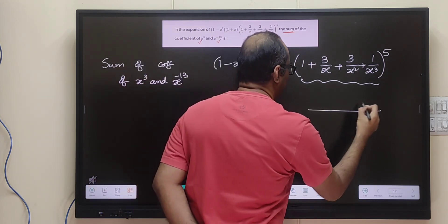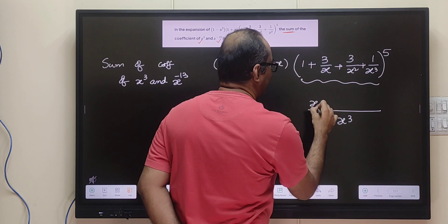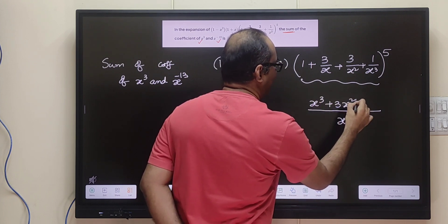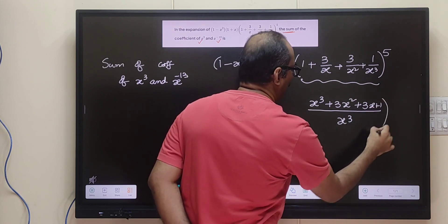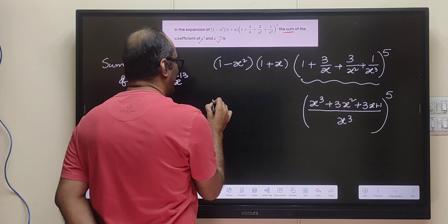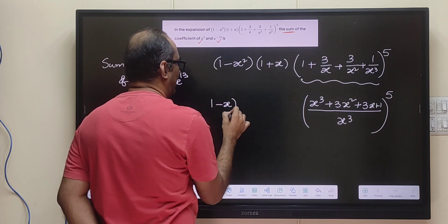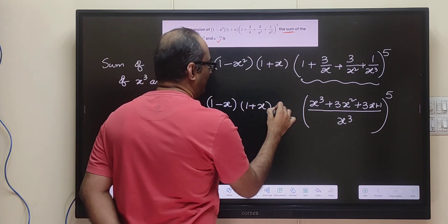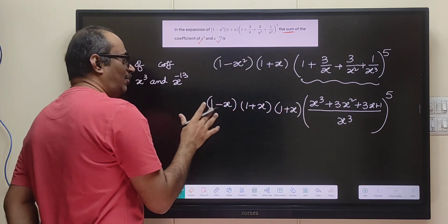Focusing on the term in parentheses to the power of 5: when you take the LCM, you get (x cubed plus 3x squared plus 3x plus 1) divided by x cubed, whole to the power of 5. And that is multiplied by (x plus 1) into (1 plus x) into (1 minus x), since (1 minus x squared) equals (1 plus x) into (1 minus x).